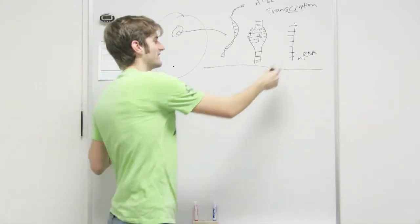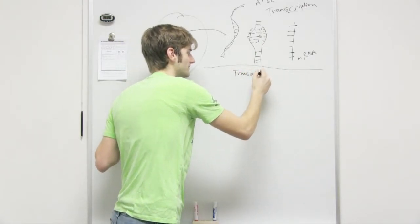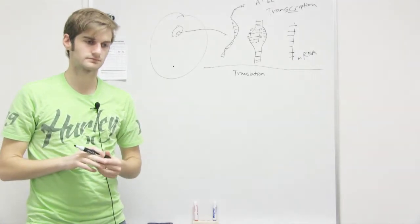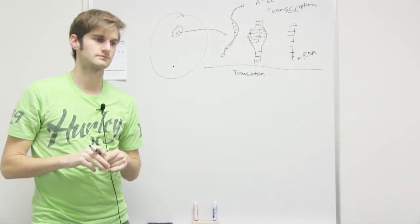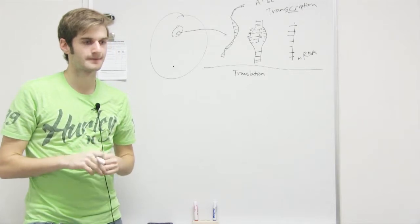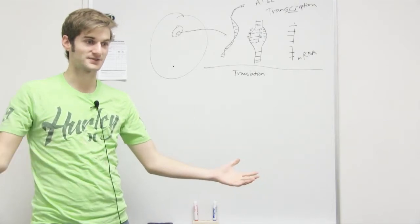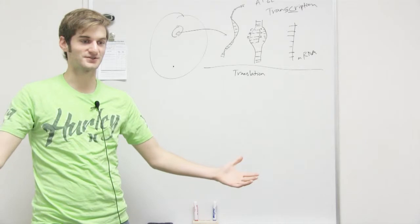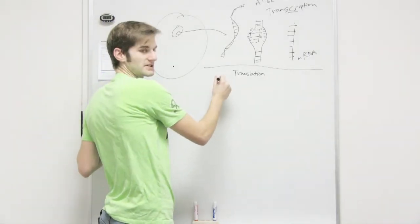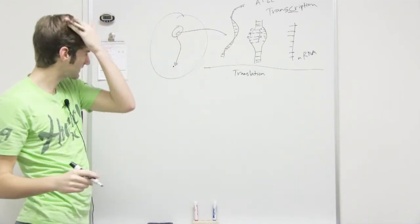So we have our single-strand RNA — we did transcription. Now we're going to do translation. If you were to define 'translation,' what would you say? When you translate a language, you make it understandable — you take it from one language and turn it into a different language, one form into a different form. That's exactly what we're doing here. Our mRNA is now able to travel through and comes to the ribosome.